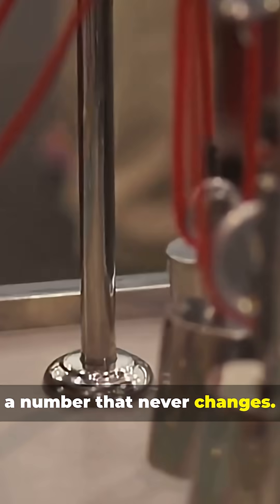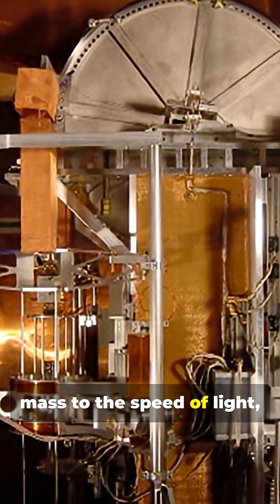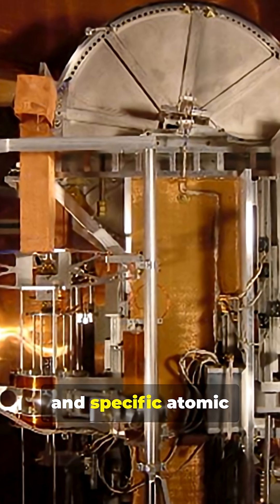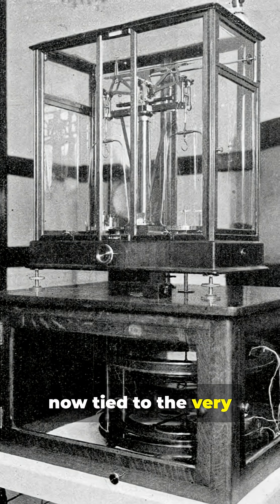A number that never changes. Using a device called the kibble balance, scientists linked mass to the speed of light, the Planck constant, and specific atomic transition frequency. The kilogram was now tied to the very laws of the universe.